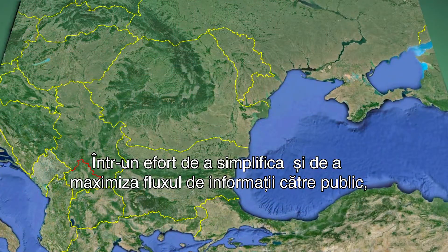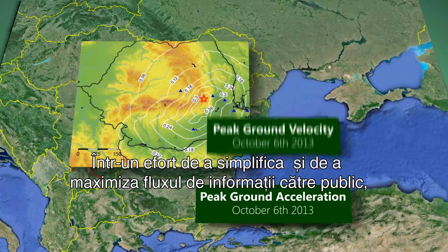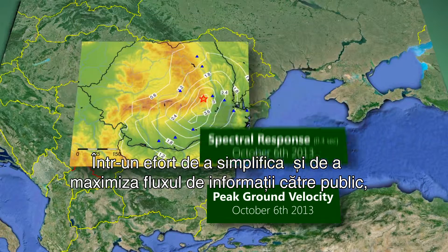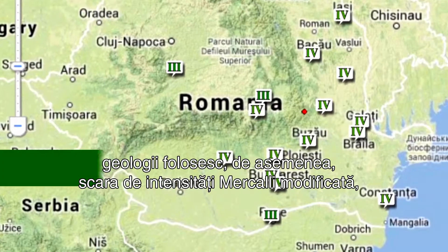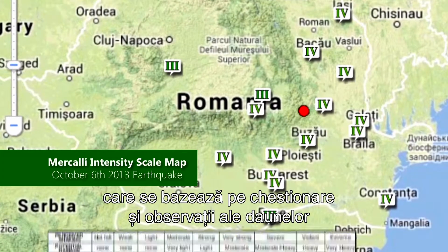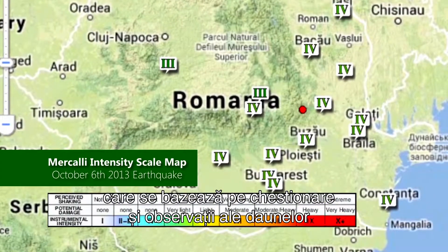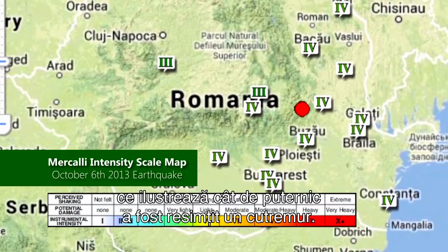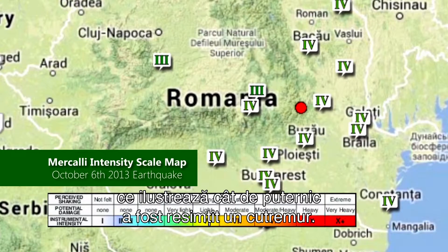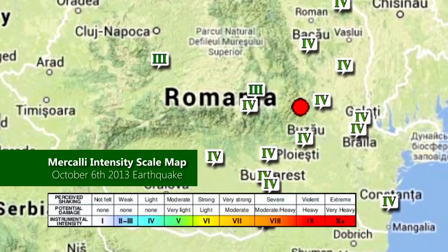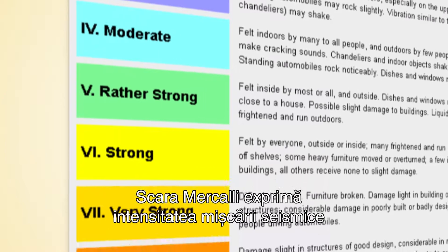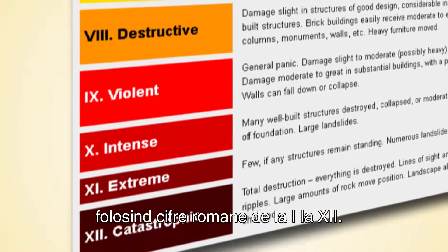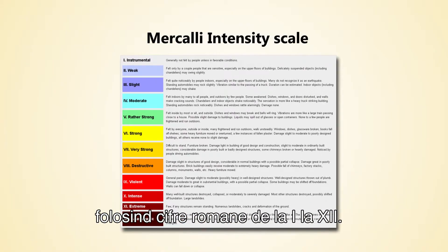In an effort to simplify and maximize the flow of information to the public, geologists also use the Modified Mercalli Intensity Scale, which is based on interviews and damage observations to show how severely an earthquake was felt. The Mercalli scale uses Roman numerals from 1 to 12 to express shaking intensity.